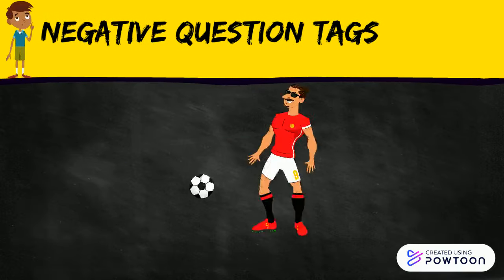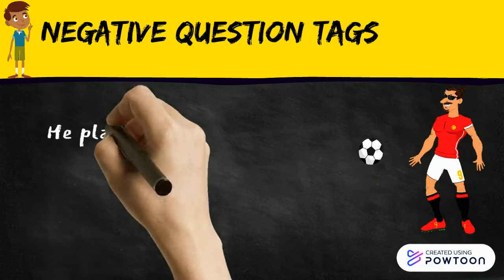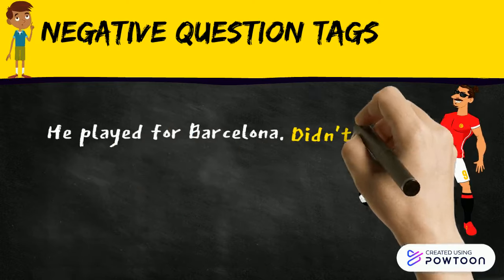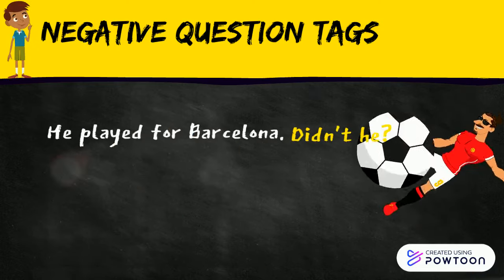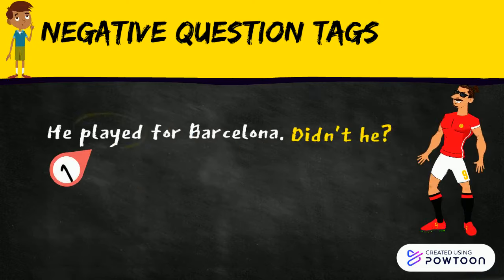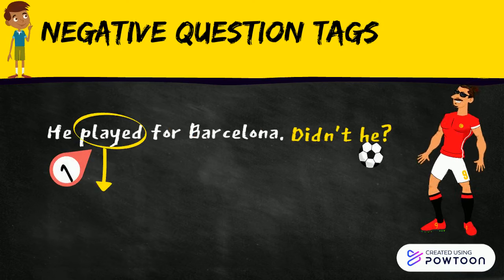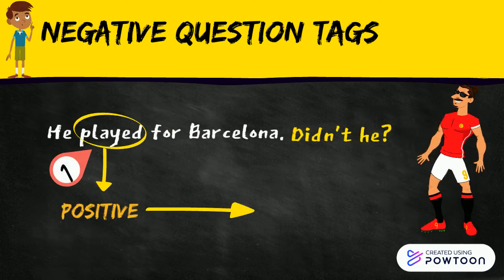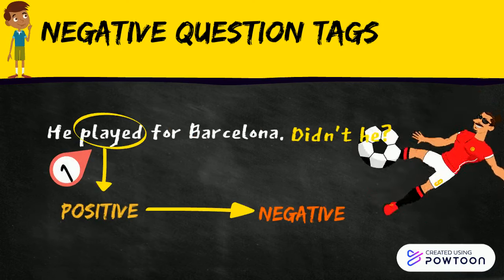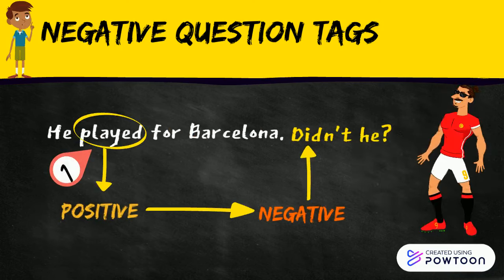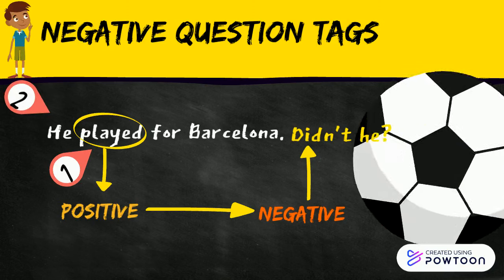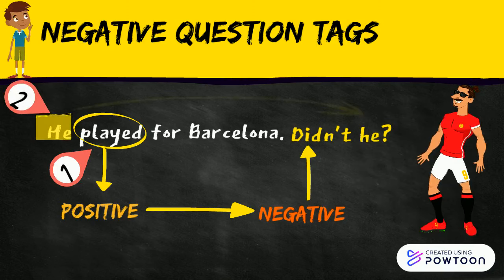When the sentence has a verb in the past simple tense, we use 'didn't' plus the subject pronoun to make negative tag questions. An example is: 'He played for Barcelona, didn't he?'